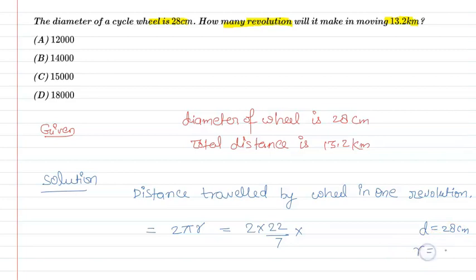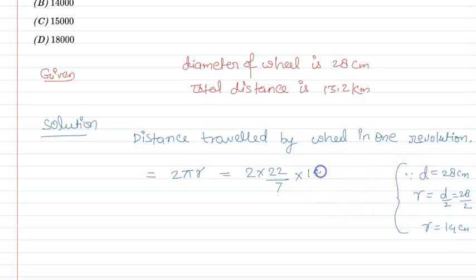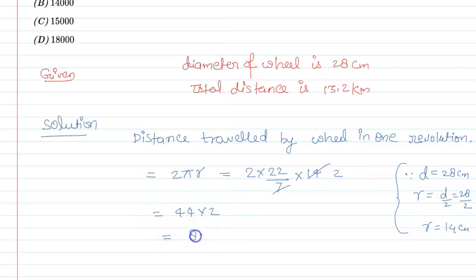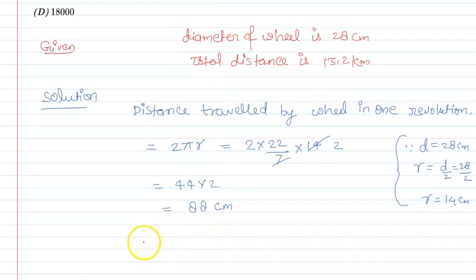Diameter d = 28 cm है। जो radius होती है वो diameter की half होती है, और 28 ÷ 2 = 14 cm। तो radius = 14 cm। Simplify करने पर: 2 × (22/7) × 14 = 88 cm। Unit का ध्यान रखें — distance traveled in one revolution by the wheel = 88 cm।